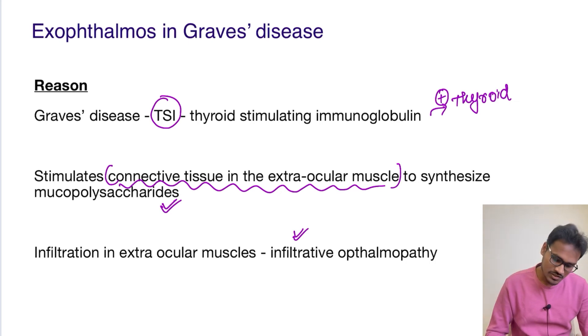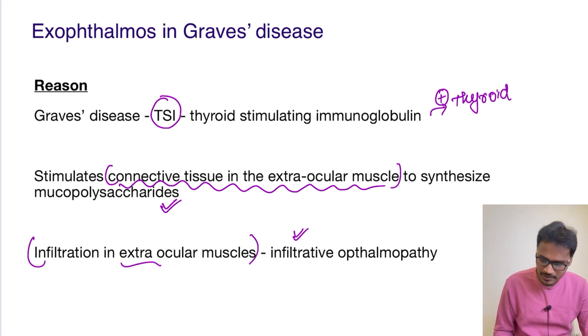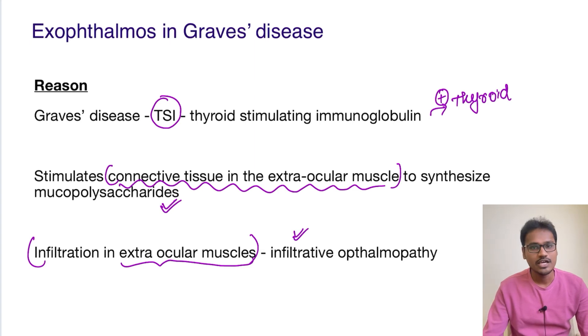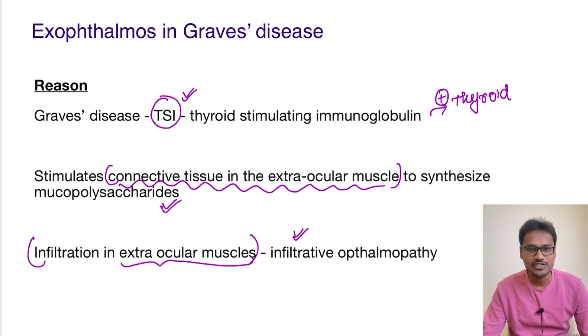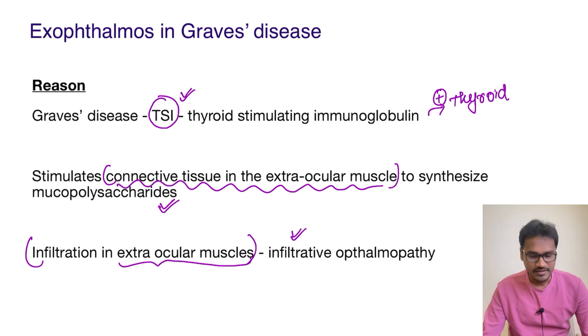So it is a kind of infiltration happening in the extraocular muscles due to the stimulation of TSI in the connective tissue. I hope that's clear. Thank you for listening — we'll see you in the next video.